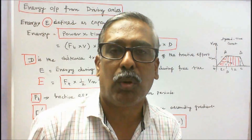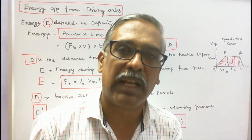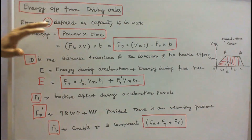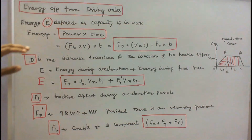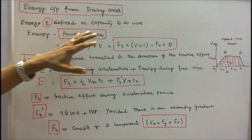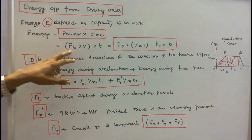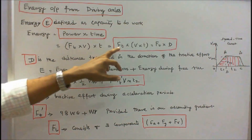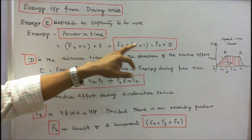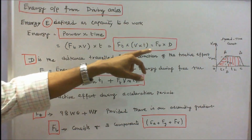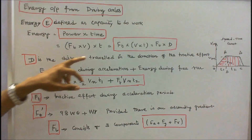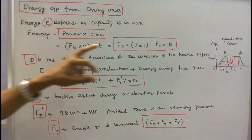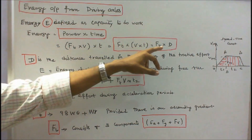This class we discuss about energy output from driving axles. Energy E is defined as capacity to do work. Energy is equal to power into time. Power is equal to tractive force Ft into velocity V. Therefore energy E is equal to Ft into V into T. Writing V into T as capital D, where D is the distance traveled in the direction of the tractive effort, E is equal to tractive force into D.